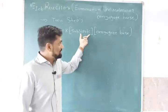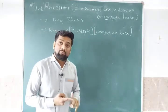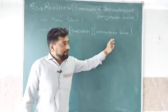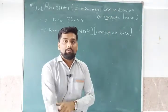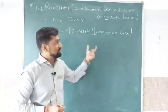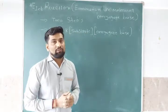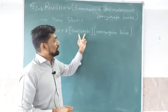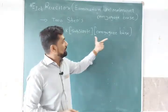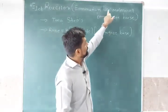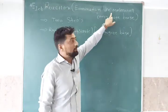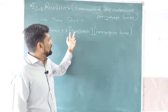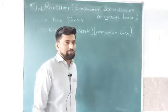The first step depends on the substrate concentration, and the second step depends on the conjugate base. There are two steps: the first step is first order and the second step is also first order. So this is a unimolecular method. The rate is directly proportional to the concentration of substrate as well as concentration of conjugate base.